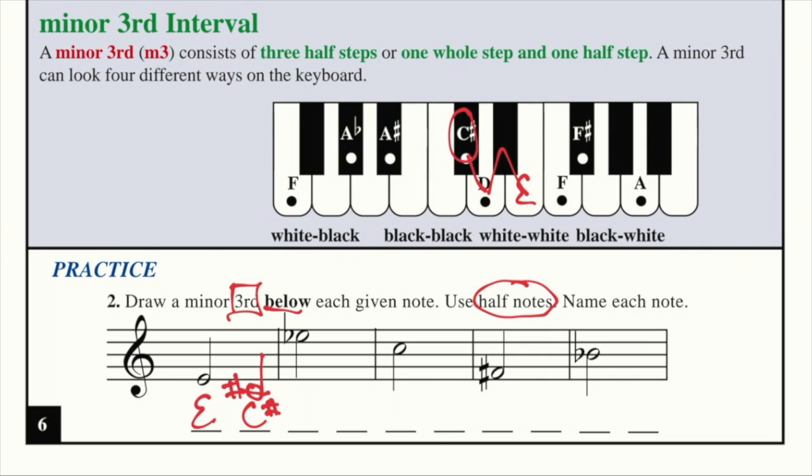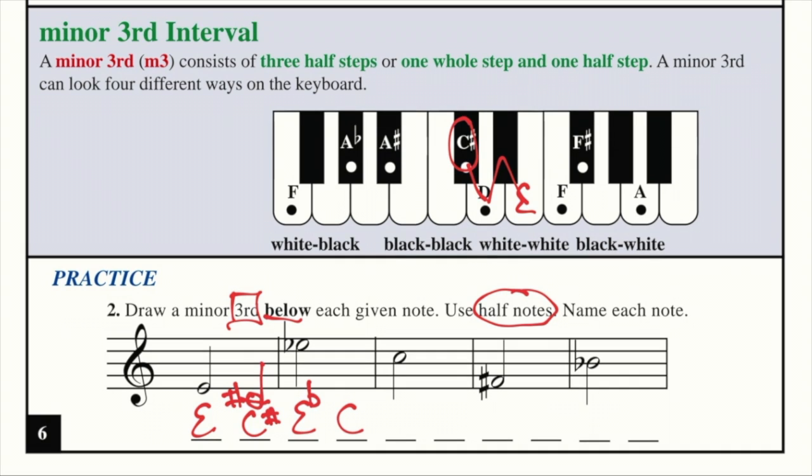Let's go to the next example. E flat now. Ignore the flat. Count 3 from E. E, D, C. It's C. We're going to erase the keyboard. And now come back to the keyboard starting on E flat and go a whole step and a half. Whole step, half. E flat to C is a minor third.